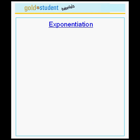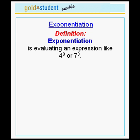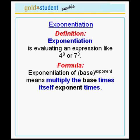This is the second tutorial on how to perform exponentiation. Let's remind ourselves of the definition. Exponentiation is what you do when you evaluate an expression like 4 to the power 8 or 7 to the power 3. The formula is that exponentiation of a number we call the base to the power we call the exponent means that you multiply the base by itself exponent times.